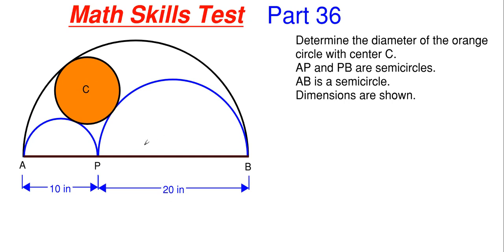We're told a couple pieces of information: arc AP (the blue arc) is a semicircle, the arc from P to B is also a semicircle, and the large black arc is also a semicircle. The first semicircle has a diameter of 10 inches, P to B has a diameter of 20 inches, meaning the overall semicircle has a diameter of 30 inches.